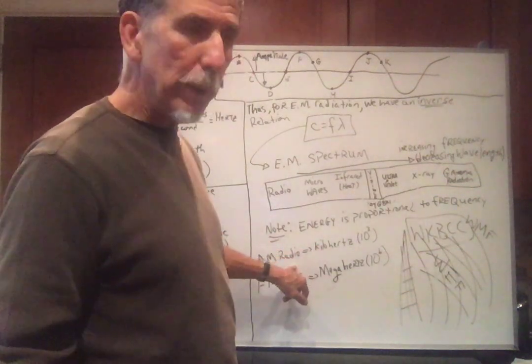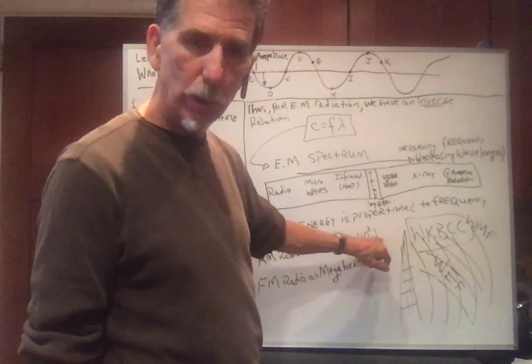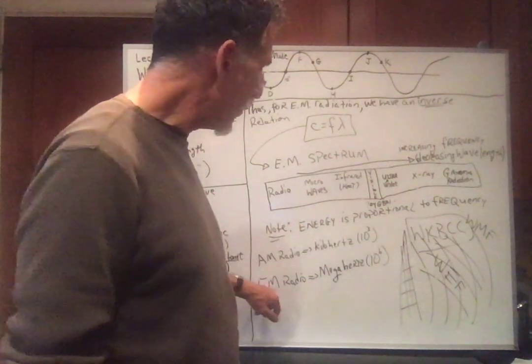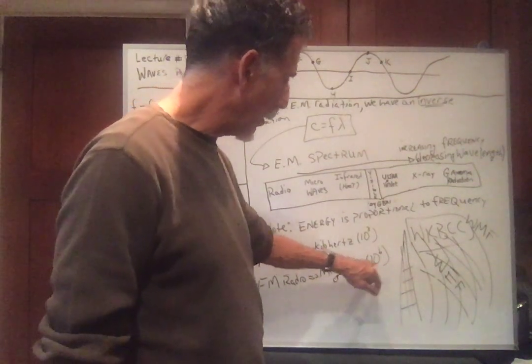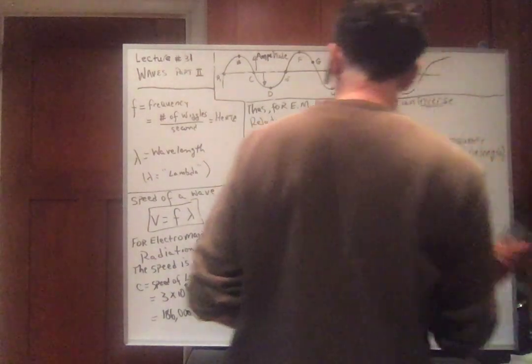Now, when we talk about AM radio, AM radio is in the kilohertz region. Kilo means 10 to the third. And FM radio is in the megahertz region. Mega means 10 to the sixth. So let's try to do a nice little problem, shall we?